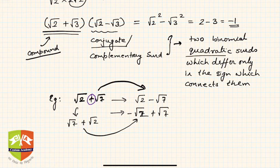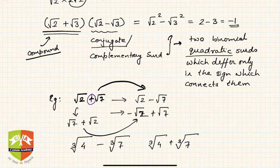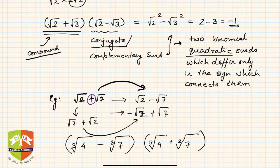Important: conjugate surds must be of quadratic order — order 2. So you cannot say that the conjugate of the cube root of 4 minus the cube root of 7 is the cube root of 4 plus the cube root of 7, because multiplying these two will not yield a rational number. Conjugate surds must always be quadratic surds.